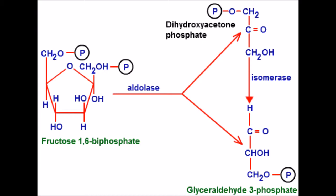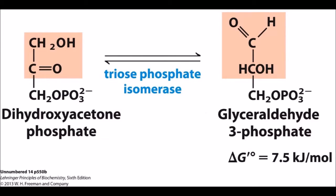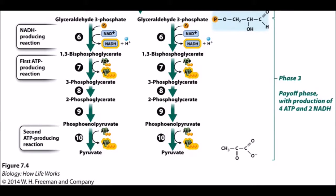In reaction 5, dihydroxyacetone phosphate is converted into glyceraldehyde 3-phosphate. Reactions 6 through 10 make up the final phase, the payoff phase. Each of the following reactions happens in both 3-carbon molecules.